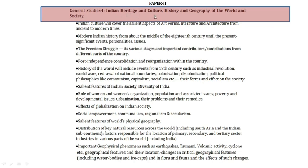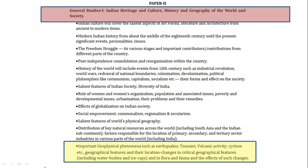Environment is specifically part of General Studies 1 and General Studies 3. In General Studies 1, the topics are mainly related to Indian heritage, culture, history, and geography. In General Studies 1 paper, topics overlapping with environment and geography include important geophysical phenomena such as earthquakes, tsunamis, volcanic activity, cyclones, geographical features and their location, changes in critical geographical features like water bodies and ice caps, and changes in flora and fauna and the effects of such changes.